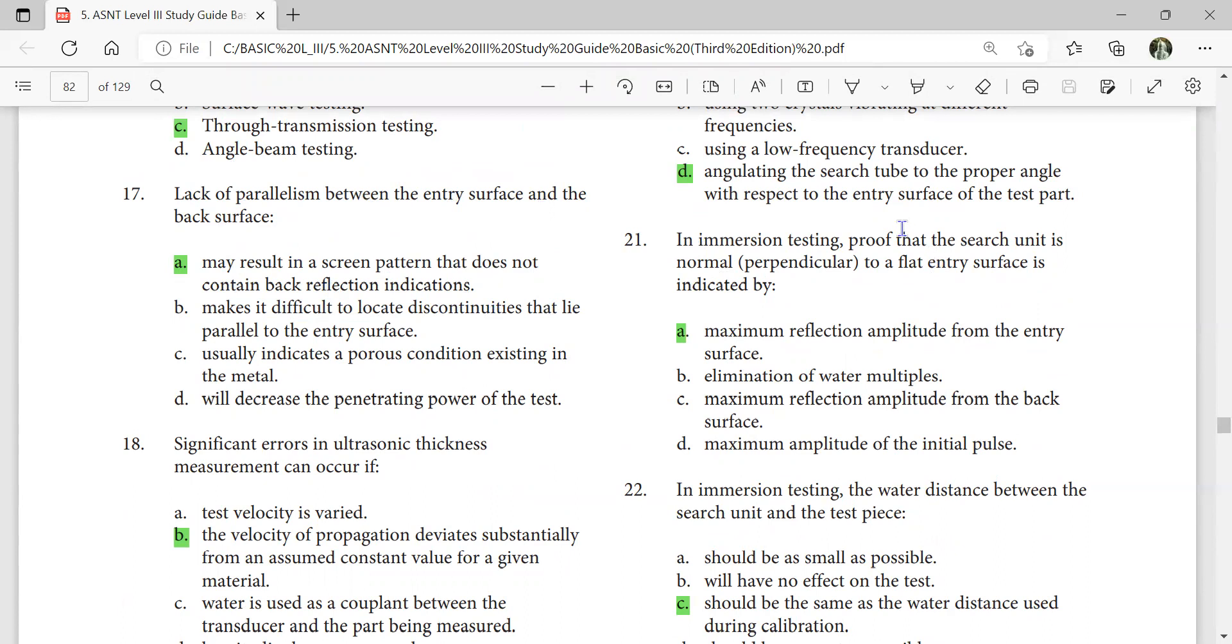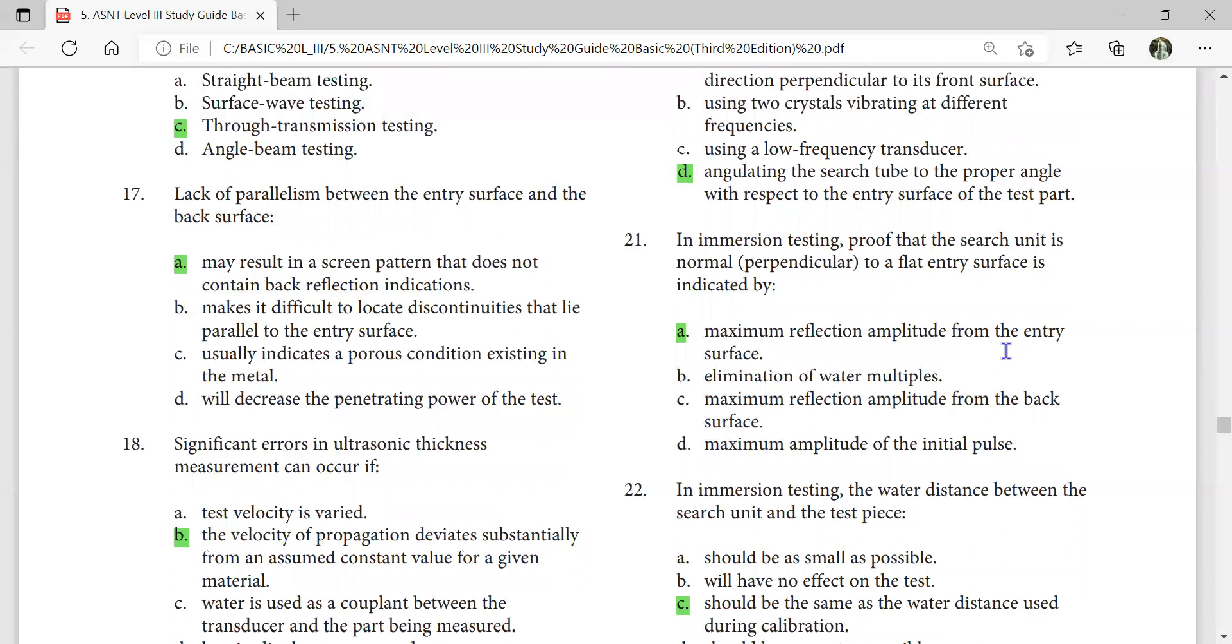In immersion testing, proof that the search unit is normal or perpendicular to a flat entry surface is indicated by maximum reflection amplitude from the entry surface.